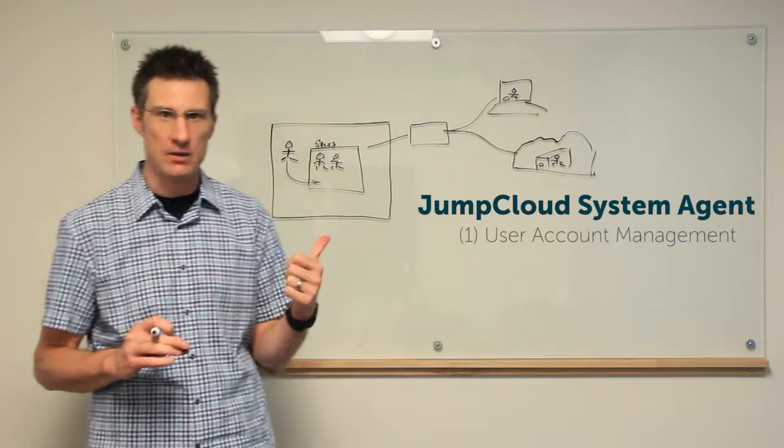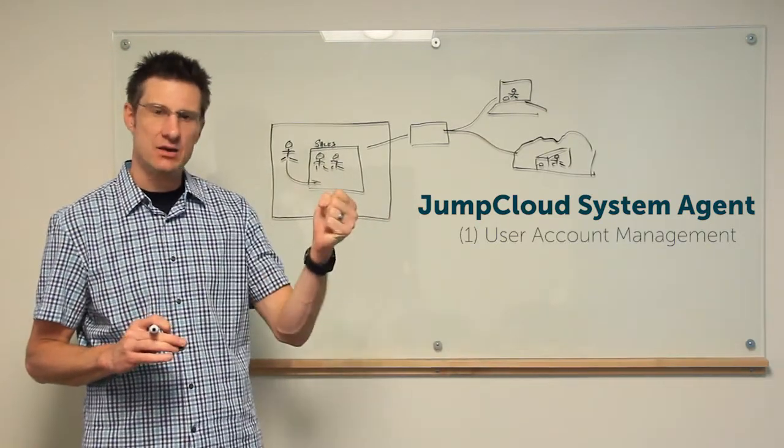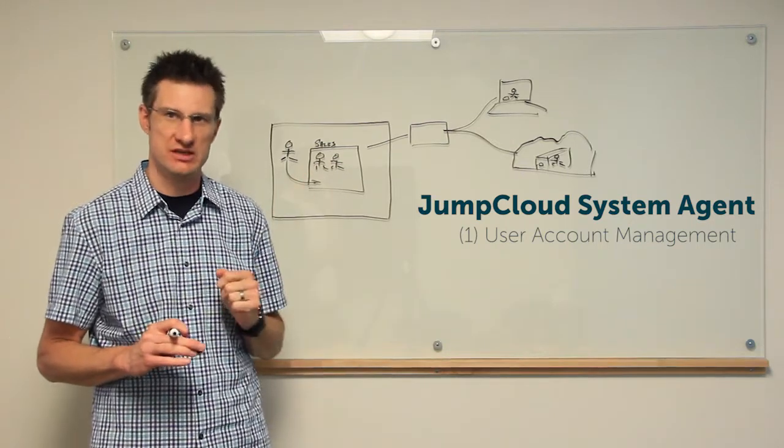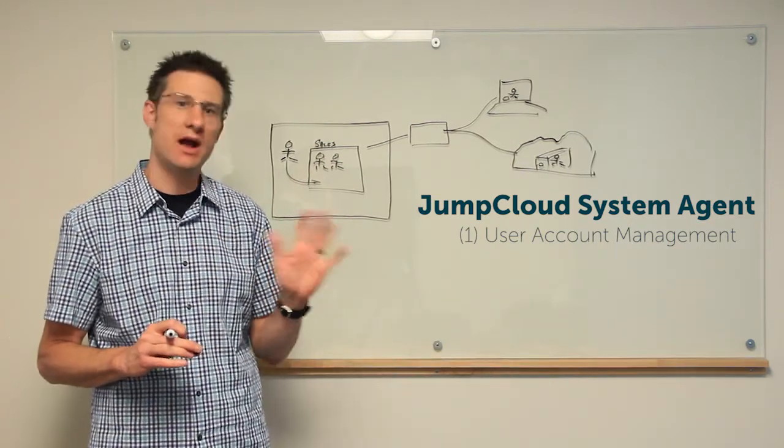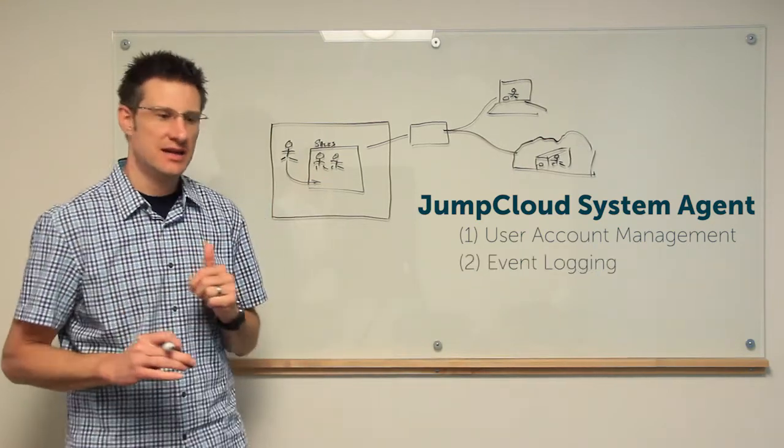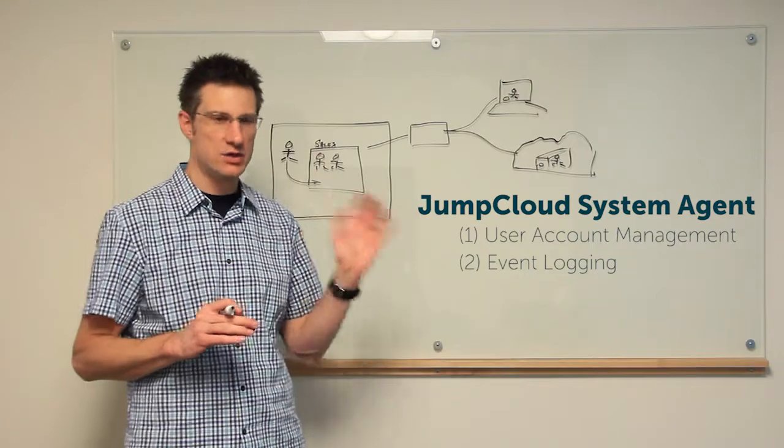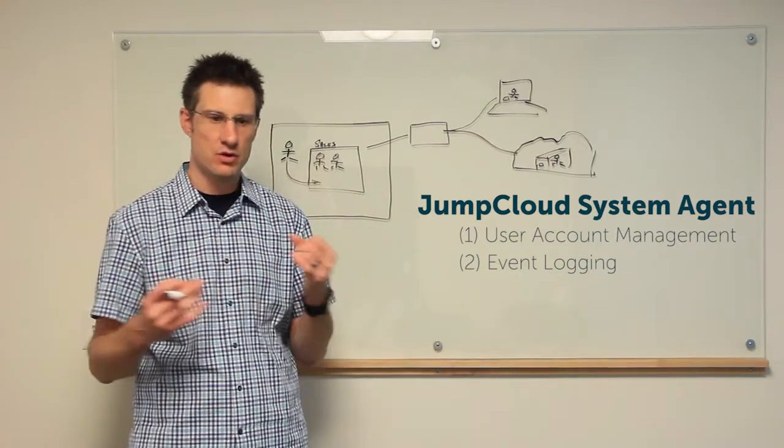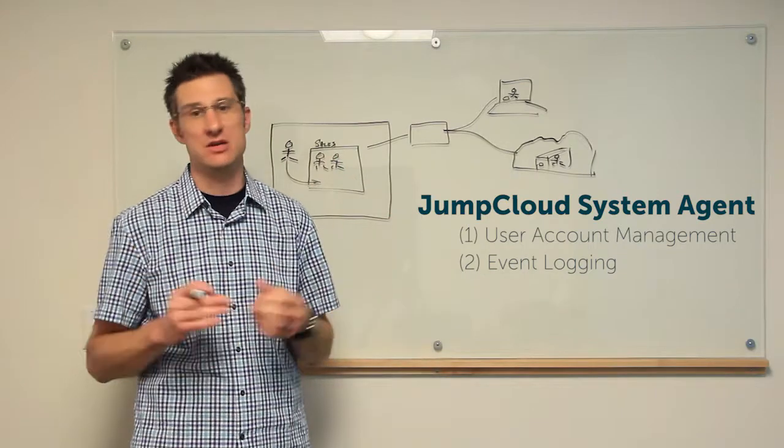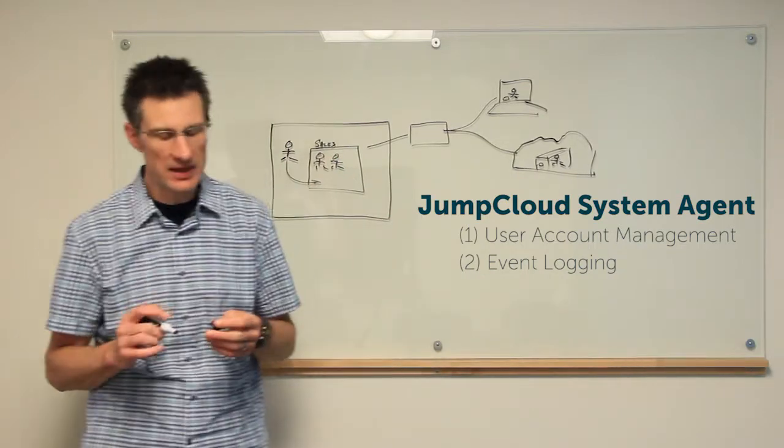The system agent does effectively four things. One, user account management, literally creating or binding to pre-existing local accounts on those machines, just as if you are on the native operating system itself. The second thing it does is event logging, meaning we know and you can collect the data from who's logging into what machines when from any IP address. Very important for compliancy reasons.